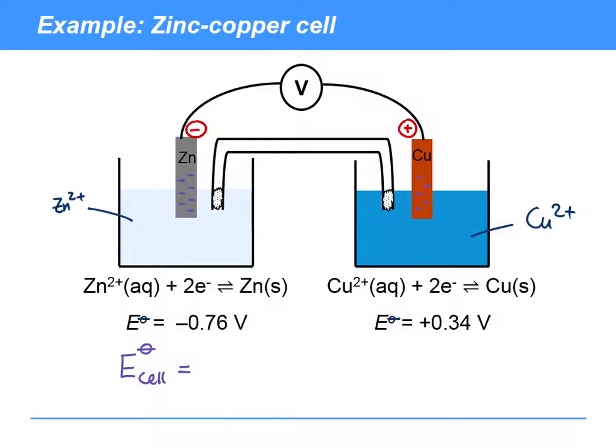So there's a potential difference between these two. This one here is at plus 0.34 volts. So that's where the positive pole is. And the negative pole is down at a potential of minus 0.76 volts.